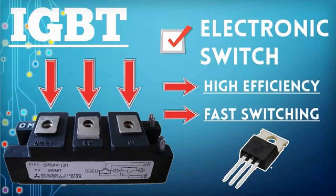P-well: Above the drift region lies the P-well, which forms a channel when the IGBT is turned on. This region is adjacent to the emitter and plays a role in controlling the flow of charge carriers. The N-plus emitter region is heavily doped with N-type carriers and is located near the top surface of the device, serving as the emitter terminal. Current flows from the collector to the emitter when the IGBT is on.